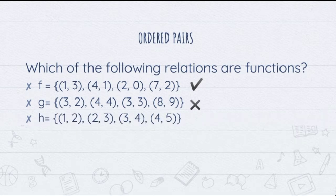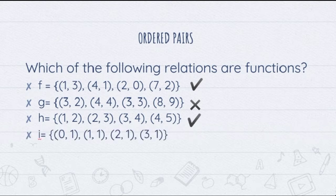Now let's have relation h. Look at the x values or the domain. We have 1, 2, 3, 4 — these are all unique. Therefore, this relation is a function. We have here another relation i, with ordered pairs (0,1), (1,1), (2,1), and (3,1).